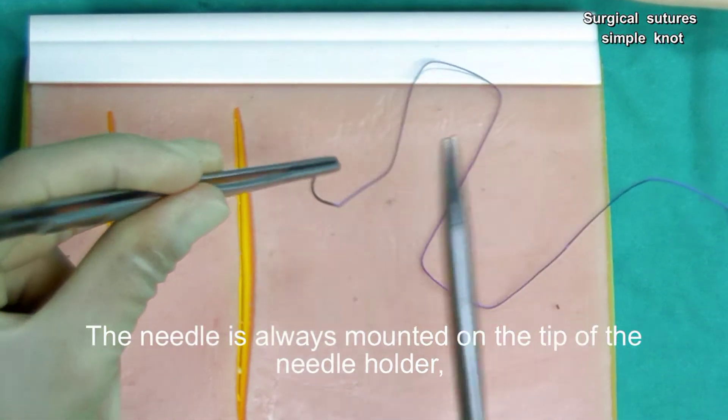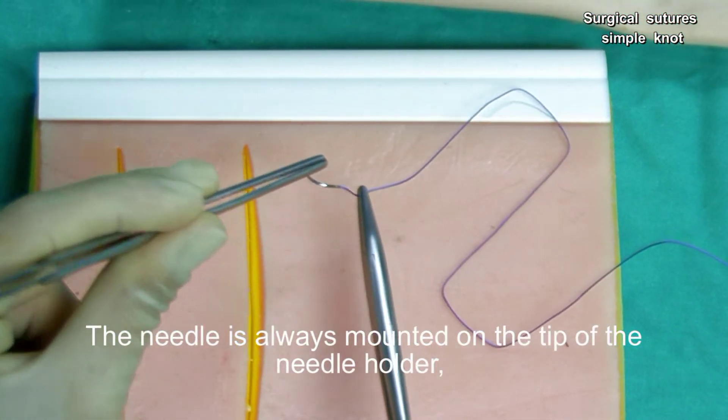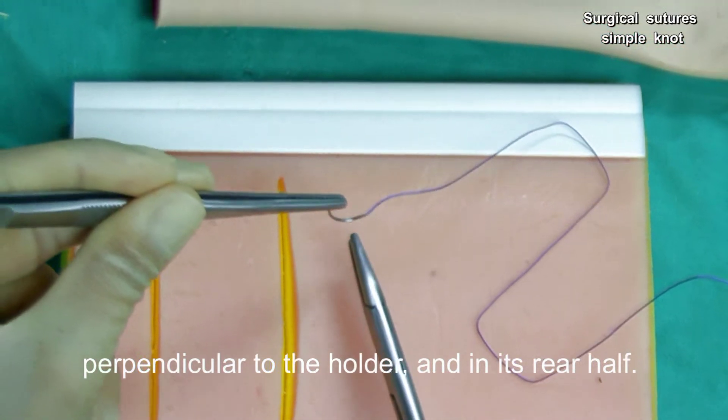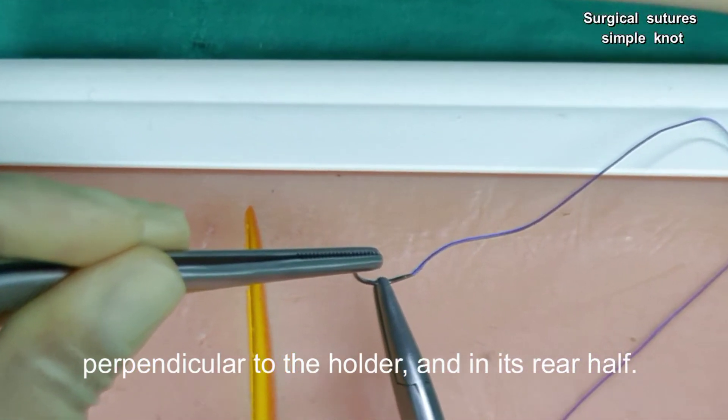The needle is always mounted on the tip of a needle holder, perpendicular to the holder and in its rear half.